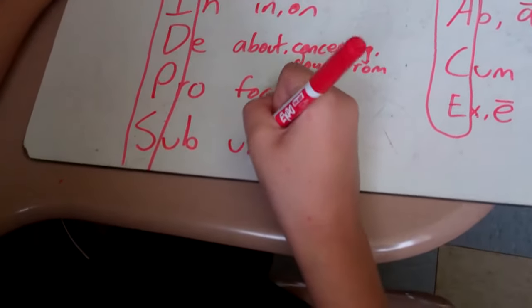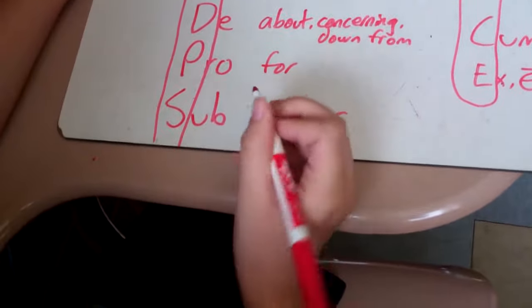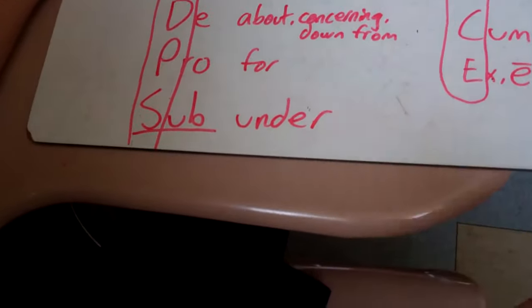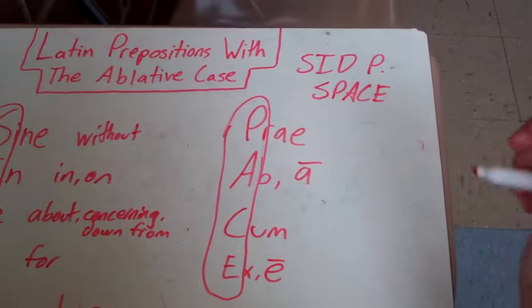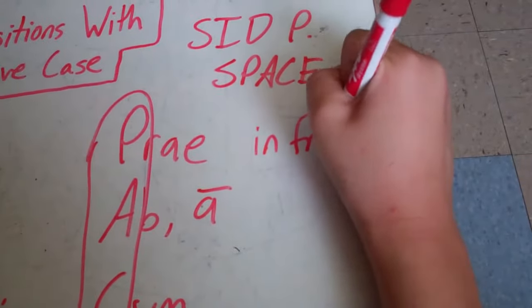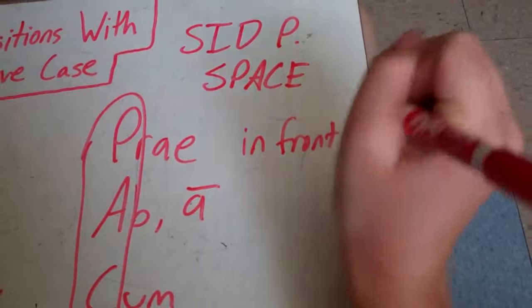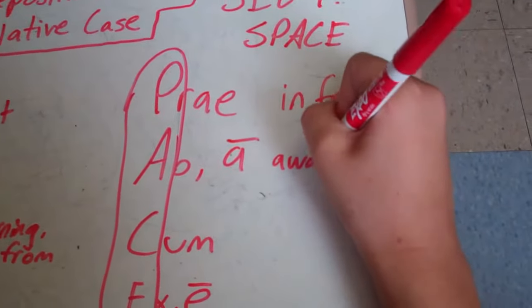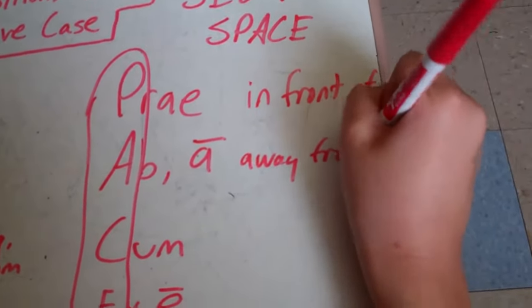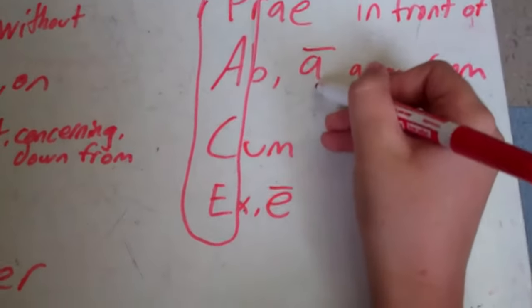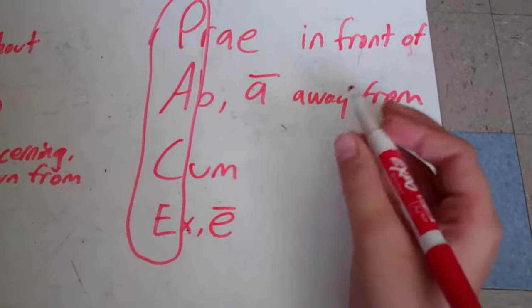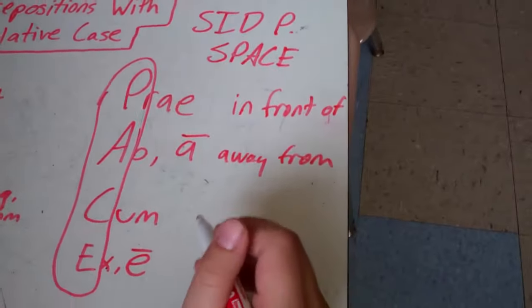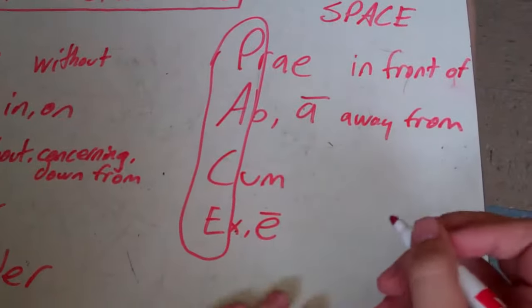Sub is under, and you can remember that by subway, submarine - submarine is under the water, subway is under the ground. Prae is in front of. Ab or a is away from, and you either do ab or a depending on what the next word is, by a vowel or a consonant, like in English where we do an or a.